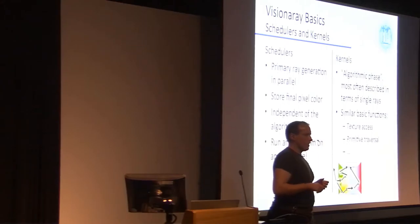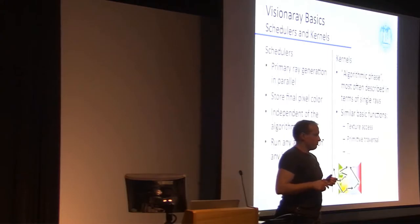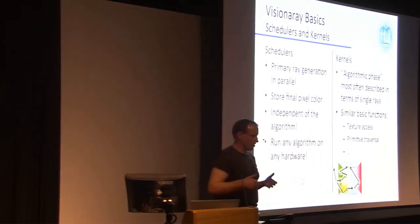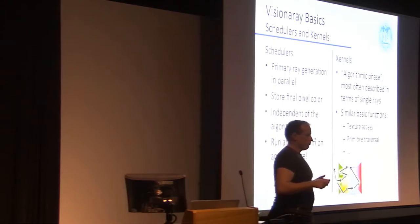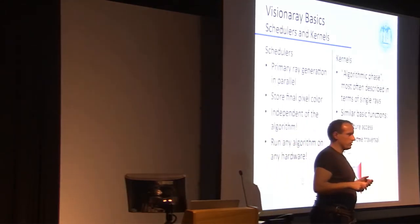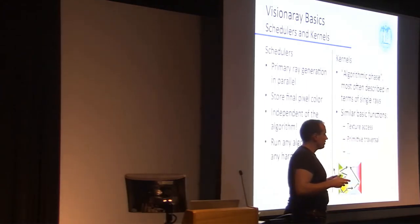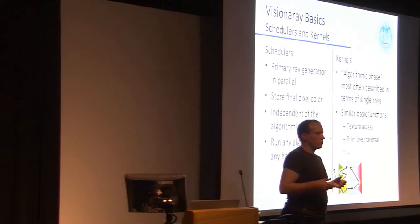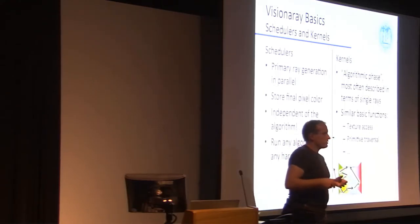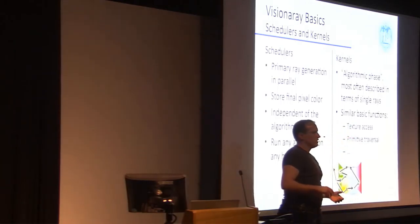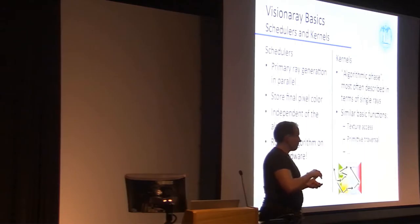Schedulers are used to generate primary rays. You configure your scheduler with a virtual camera position, and then the scheduler will generate lots of primary rays. Depending on the hardware the scheduler targets, this will be highly efficient and in most cases parallel. The scheduler performs an algorithm which in most cases returns a color or some depth value, and then writes the result to something called a render target — an output buffer that can be displayed directly to the frame buffer or written to a file.